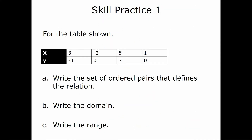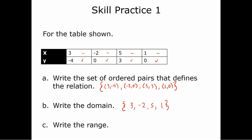Let's look at a table. We have x values and y values, and we want to write the set of ordered pairs that defines this relation: {(3, −4), (−2, 0), (5, 3), (1, 0)}. Since this is a set, we put it in braces. The domain — just the x values — is {3, −2, 5, 1}. The range — the y values — is {−4, 0, 3}. Note that 0 appears twice but we only write it once.